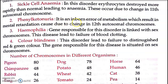The next disorder is phenylketonuria (PKU). It is an inborn error of metabolism which results in mental retardation, caused due to a change in the 12th autosomal chromosome. Basically, phenylketonuria is an inborn condition — the baby is born with this problem. Inborn means the baby already has the metabolic problem at birth.